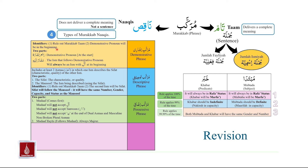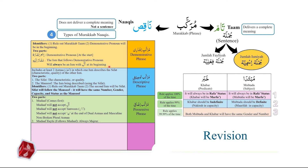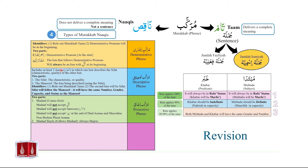Each Murakkab Ishaari has two parts: Ism Ishara, which is the demonstrative pronoun coming at the start, and Mushar-on-Ilai, which is the Ism that follows the demonstrative pronoun. A useful clue is that the Mushar-on-Ilai will always be an Ism with Al at its beginning.